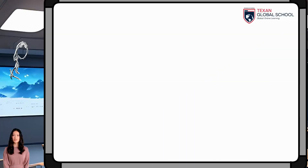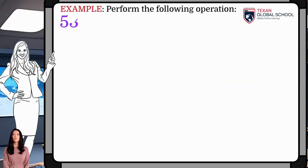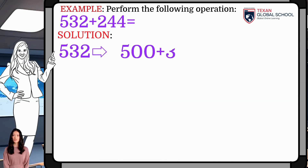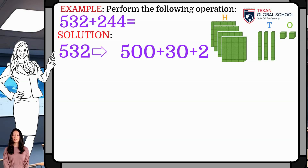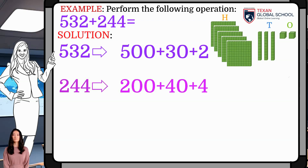In this last example, we will add 532 plus 244. First, decompose each addend into 1s, 10s, and 100s. 532 has 2 1s, 3 10s, and 5 100s.